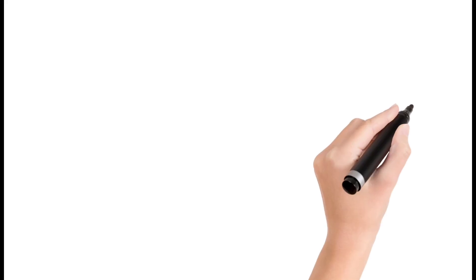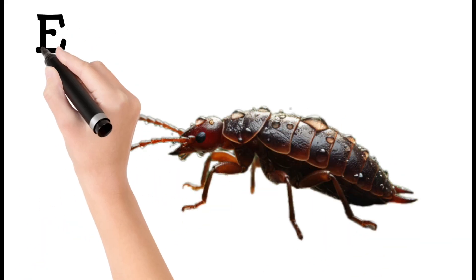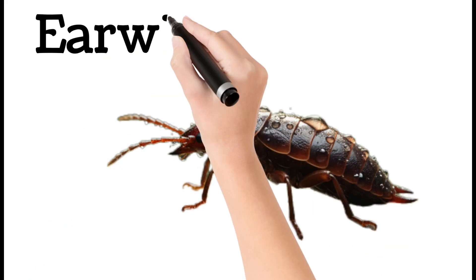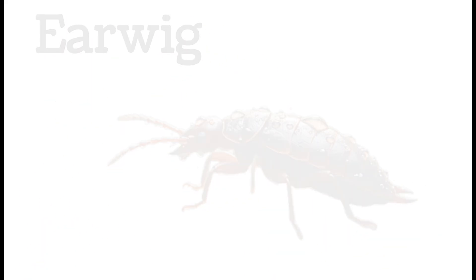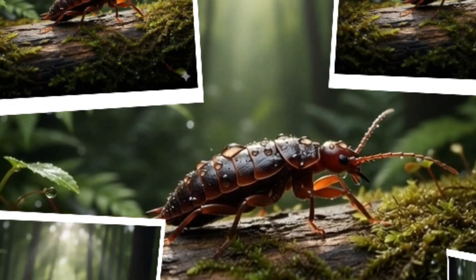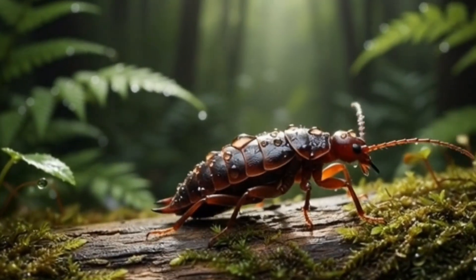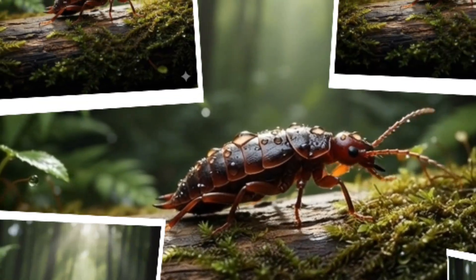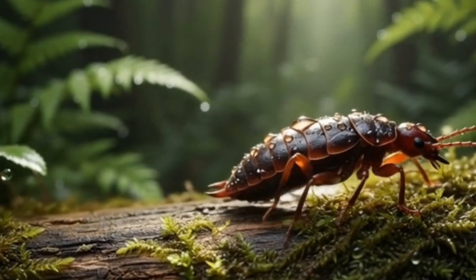Next, earwig: known for pincers on its tail. Mostly harmless to humans. Feeds on plants and insects. Active during night. Hides in dark, moist places.